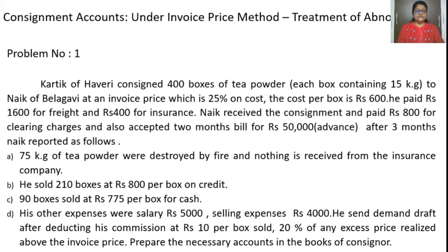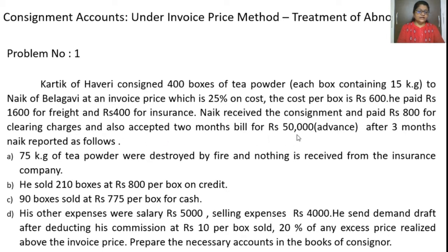Karthik of Haveri consigned 400 boxes of tea powder, each box containing 15 kg, to Nayak of Bilgami at an invoice price which is 25% above cost. The cost per box is Rs. 600. He paid Rs. 1600 for freight and Rs. 400 for insurance. Nayak received the consignment and paid Rs. 800 for clearing charges and also accepted a 2-month bill for Rs. 50,000 advance.